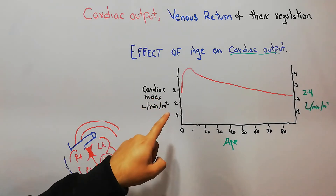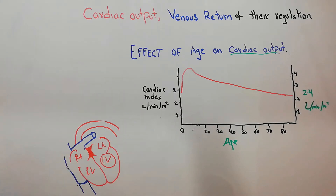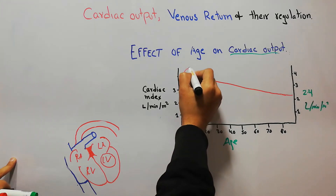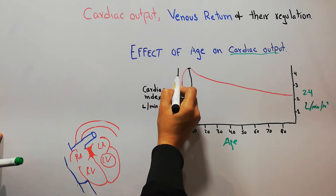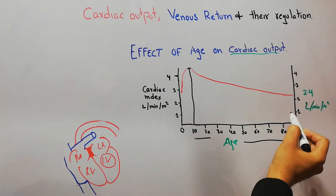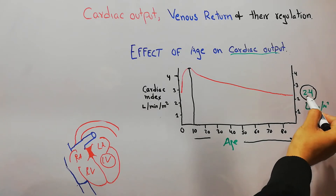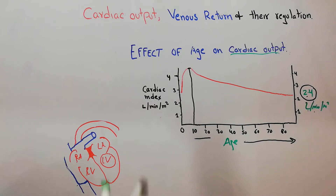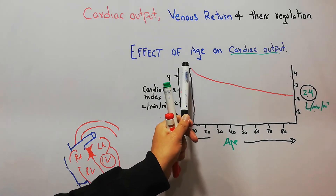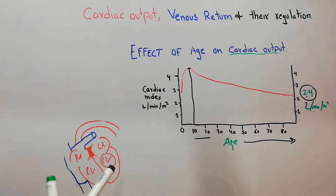The cardiac index starts increasing and at around the age of 10 it reaches its peak level — more than 4 liters per minute per meter square. So initially the cardiac index starts increasing and at the age of 10 years it reaches its peak value of more than 4 liters per minute per meter square of the body.